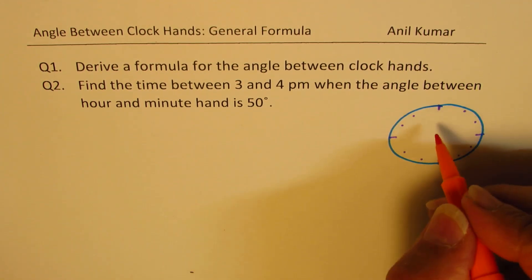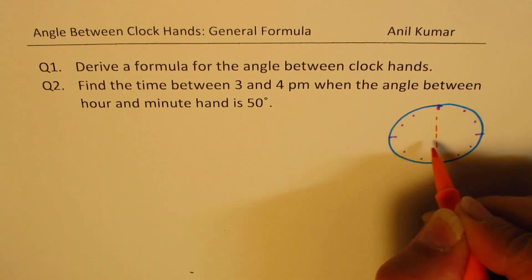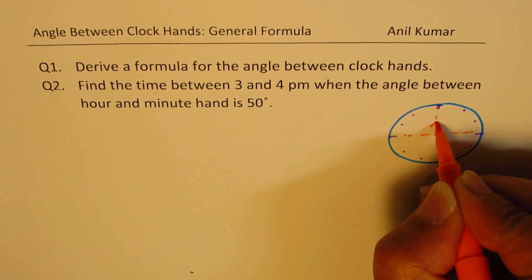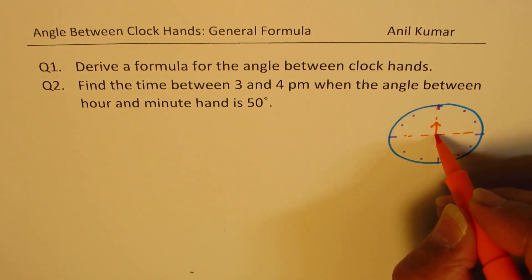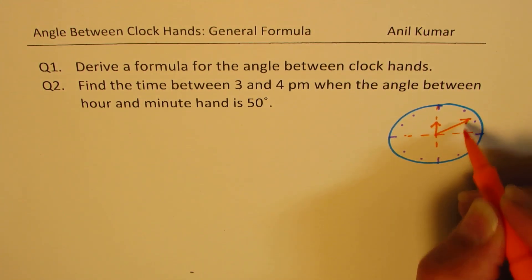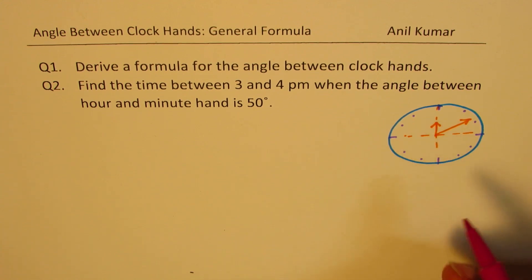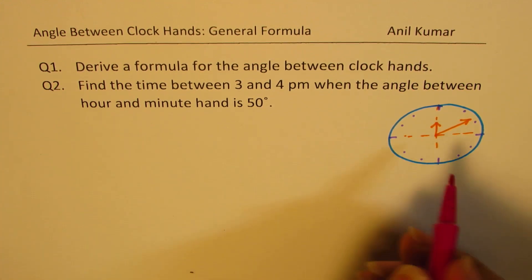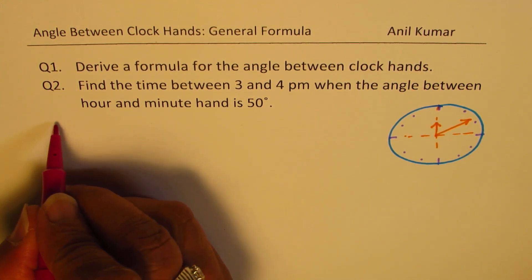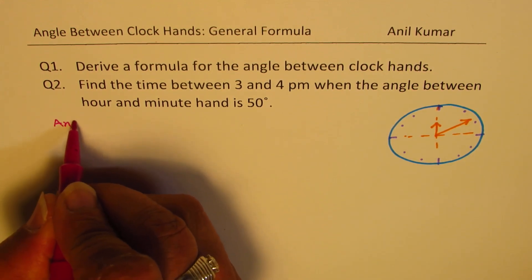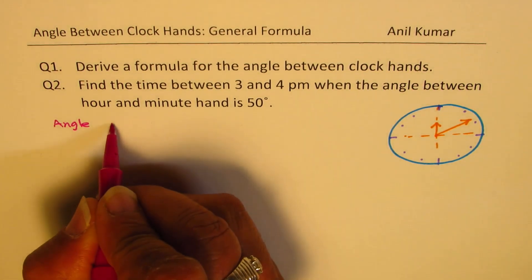Now, as you know, in a clock there will be an hour hand and there will be a minute hand. Let's consider both the hands one by one and see how much angle they cover in a minute. We are basically interested in finding angle per minute.